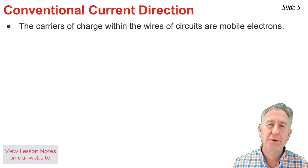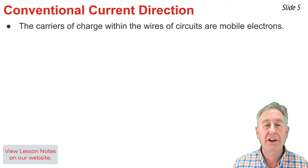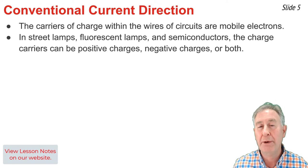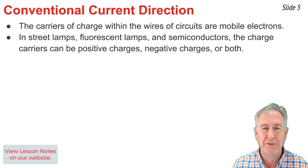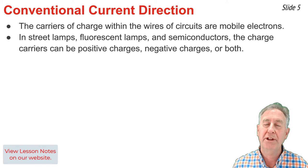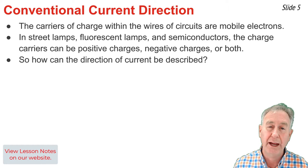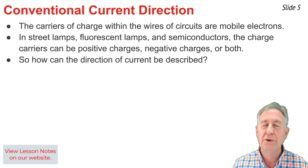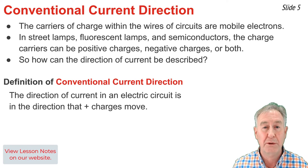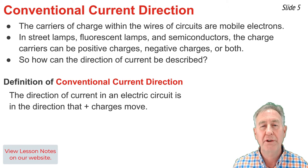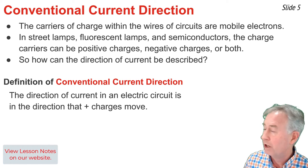The carriers of charge within the wires of electric circuits are negatively charged mobile electrons. Within street lamps, fluorescent lamps, or semiconductors, the charge carriers can be positive charges, negative charges, or even both types of charges. With so many possibilities of charge types that could be moving, how exactly do we describe the direction of electric current? The answer has historically been answered by means of a convention, or agreement among scientists. The direction of conventional current within a circuit is the direction that positive charges would move.